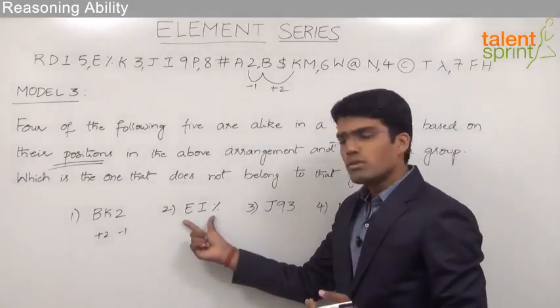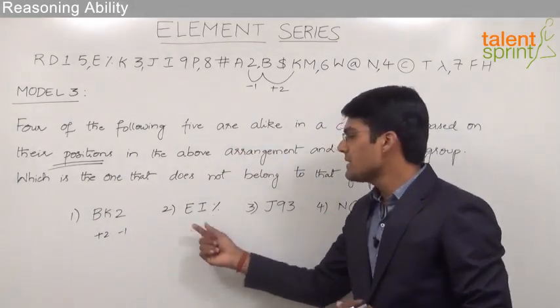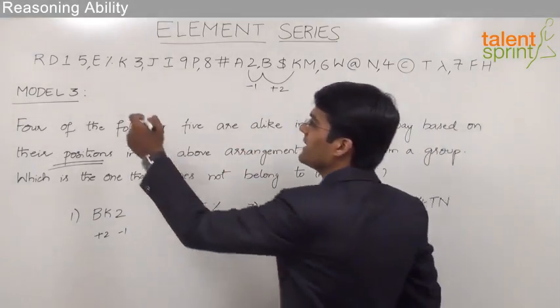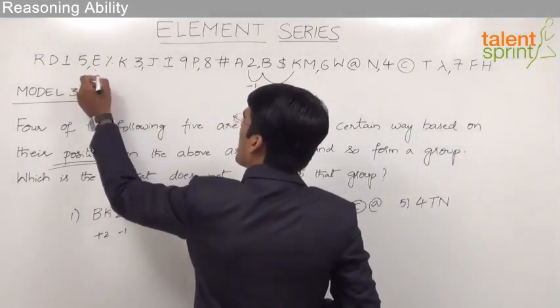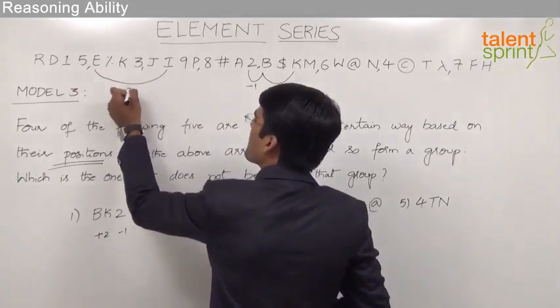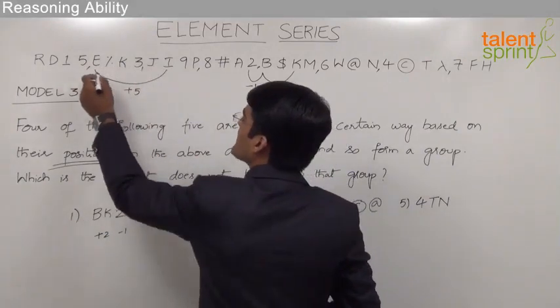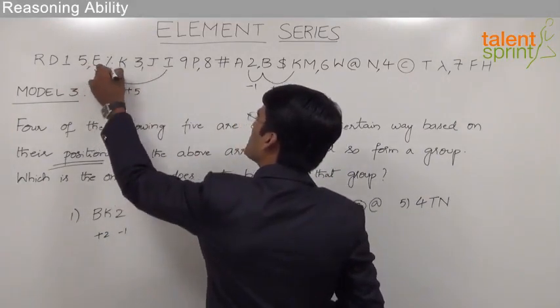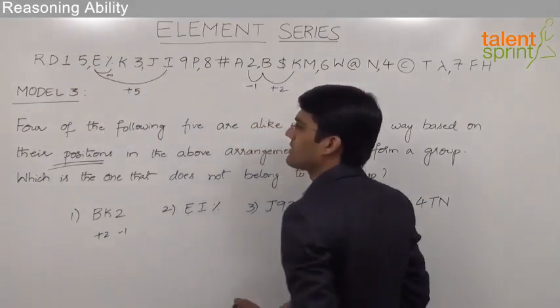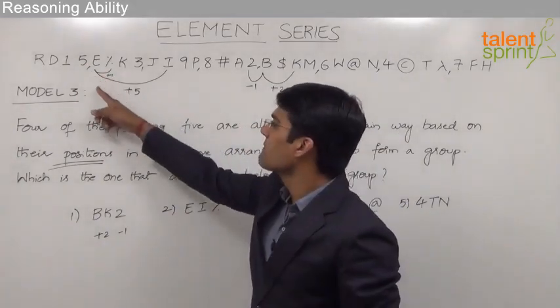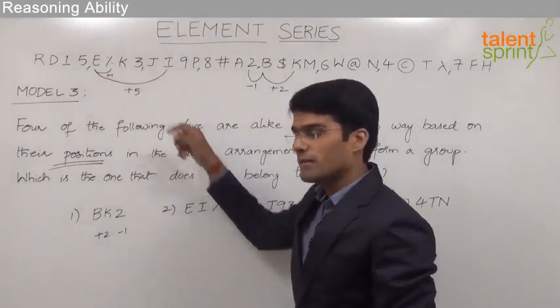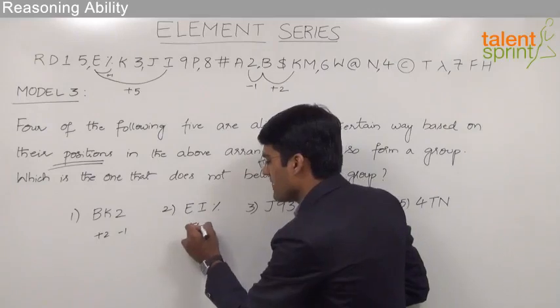Similarly let us find out the positioning of E I percentage. As we can see here E is in this position now I is five places away from E. So plus 5 that is 1 2 3 4 and 5 and percentage is again one position away from E. So here the positioning is plus 5 and then plus 1.